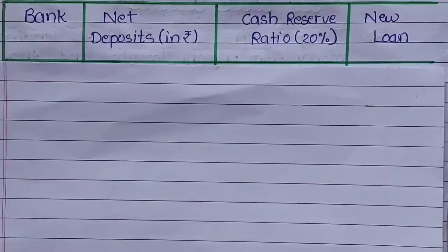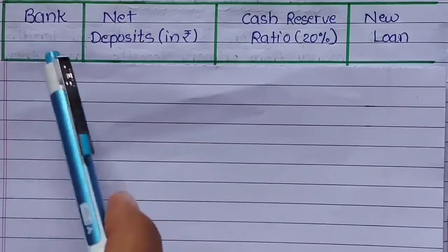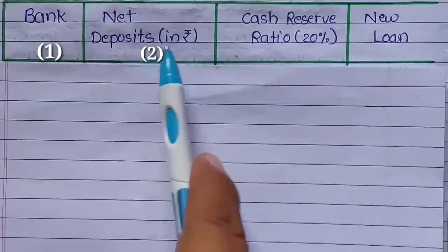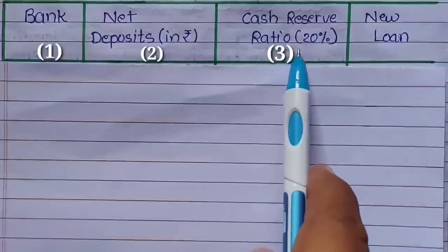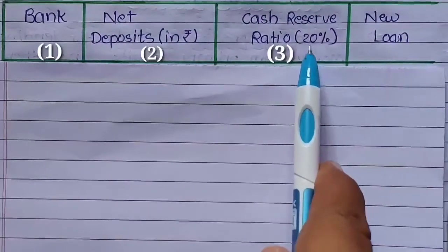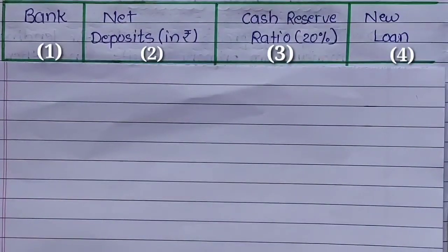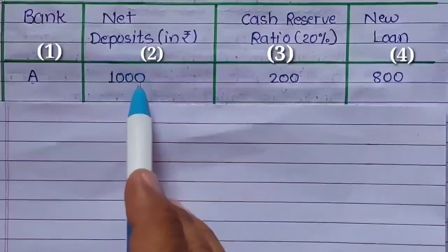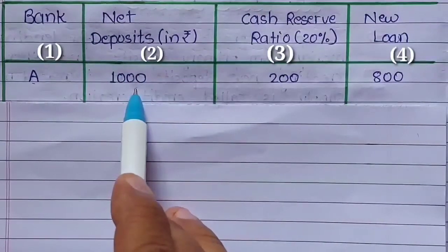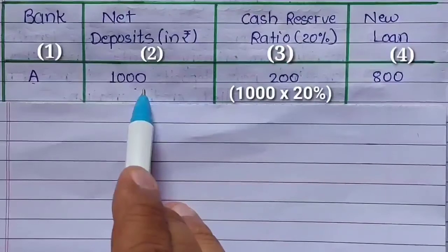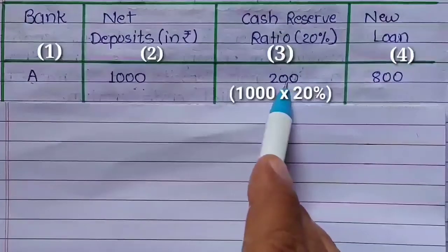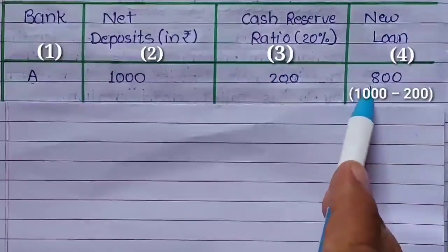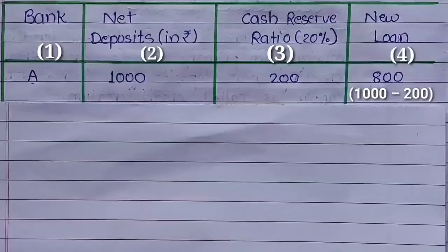Credit creation की process को समझने के लिए हम एक table का study करेंगे, जिसमें first column में अलग-अलग banks होंगी, second column में net deposit, third column में cash reserve ratio जो कि 20% मानी हुई है, और fourth column में bank new loan किस तरीके से देती है. हमारे example के according, A नाम की bank में net deposit 1000 है, उसका 20% cash reserve ratio 200 bank अपने पास रख लेती है, और 800 रुपए की नई loan किसी दूसरे जरूरत मंद customer को दे दी जाती है.